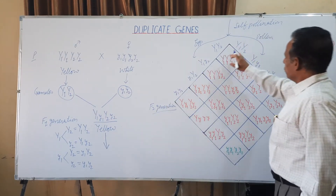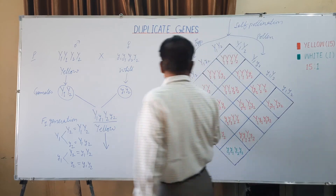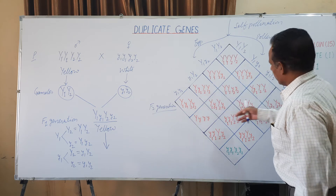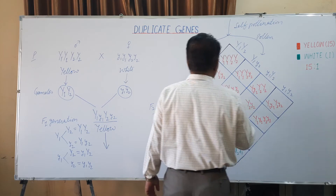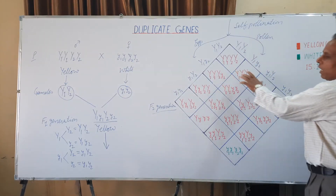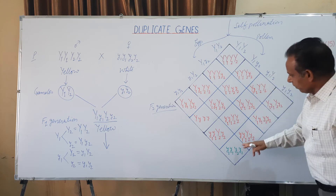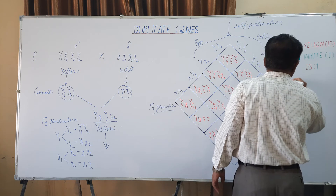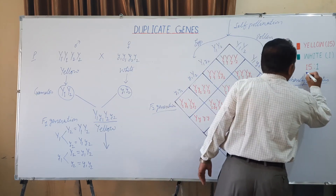When the male and female gametes fuse randomly, they produce 16 types of zygotic combinations in the F2 generation. Out of these 16 combinations, 15 possess the same phenotypic effect — that is, yellow endosperm — because in these 15, either dominant Y1, or dominant Y2, or both Y1 and Y2 are present. They constitute 15 out of 16 zygotic combinations. In one combination, both dominant genes remain recessive, producing white endosperm. So we get the phenotypic ratio in the F2 generation as 15:1.